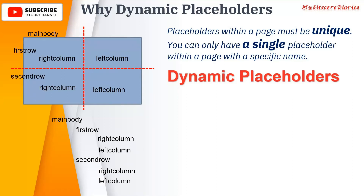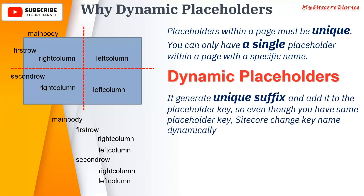With dynamic placeholder, even if a developer has provided placeholders named 'main body', 'first row', 'right column', 'left column' — when an author adds the 'right column' twice, it automatically adds a unique suffix. So even though the developer gave the same placeholder name, Sitecore dynamically adds a unique suffix to make each instance unique.